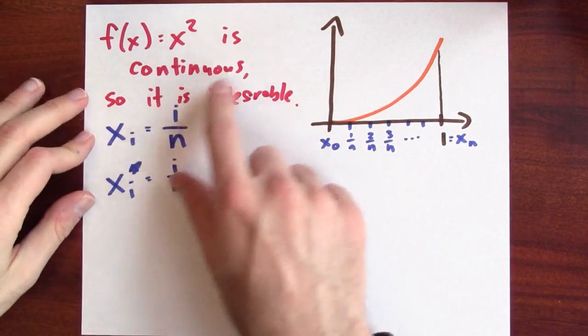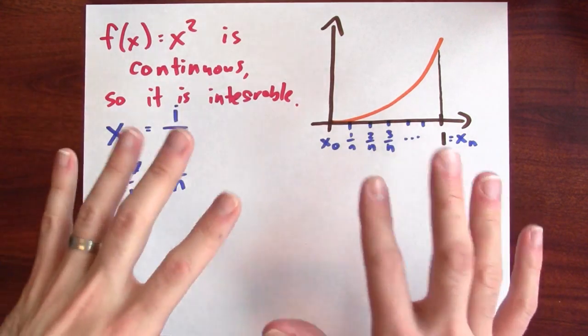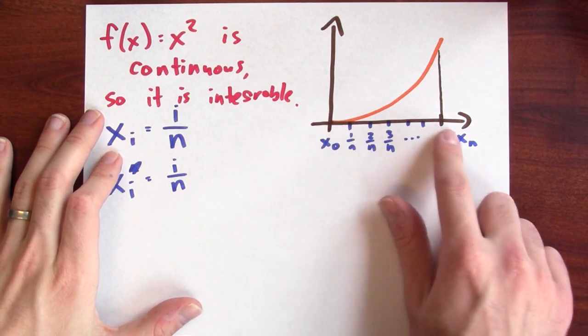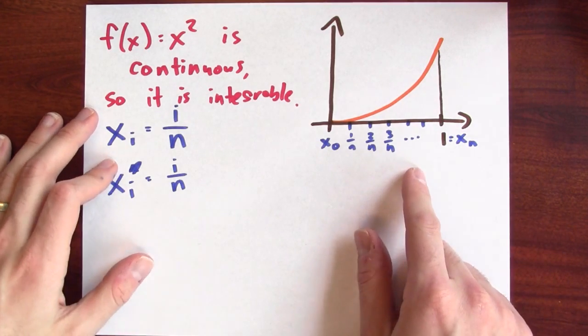Let's integrate x squared from 0 to 1 by using the definition of integral. Since the function x squared is continuous, it's integrable. So it won't matter exactly how we choose our partition or how we choose our sample points as long as the partition is fine enough.